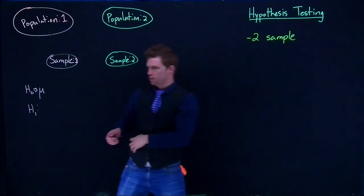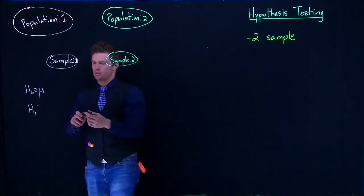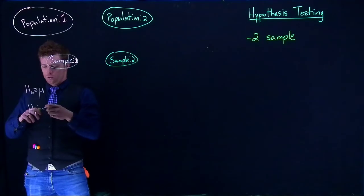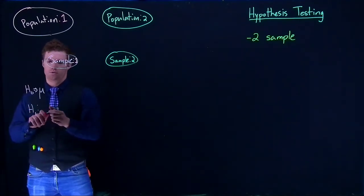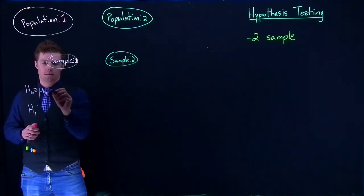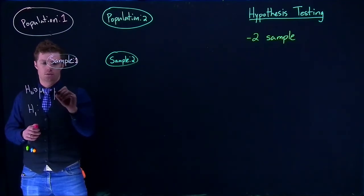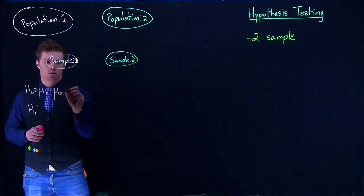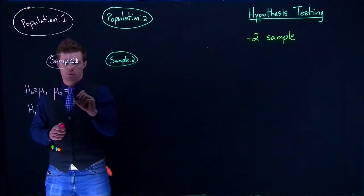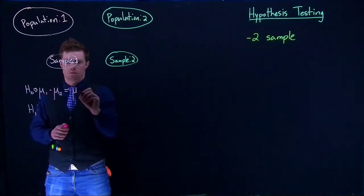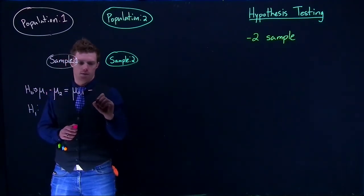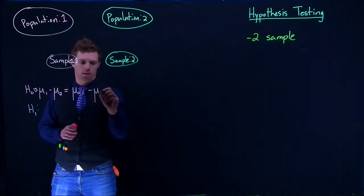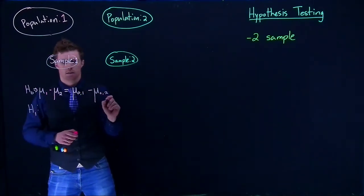What we're saying is that mu 1 minus mu 2 equals mu not 1 minus mu not 2.